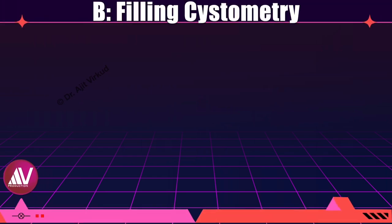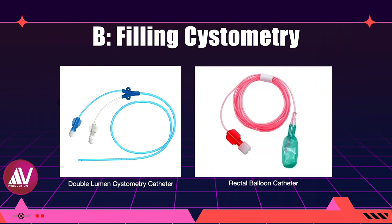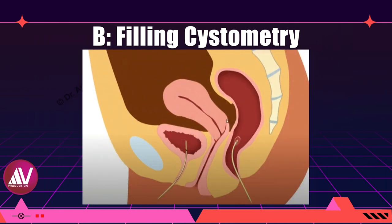The second part is filling cystometry, done to assess the storage capacity of the bladder. The color-coded catheters required are shown. A 6 to 7 French PVC color-coded blue filling catheter and a pressure sensor are introduced into the bladder for 12 to 15 centimeters. A 6 to 7 French PVC color-coded red pressure sensor is also introduced into the rectum or vagina to measure the intra-abdominal pressure, also introduced for about 12 to 15 centimeters inside. Many make a small cut into the balloon for a better recording. Secure both catheters with adhesive tape as close to the insertion as possible.